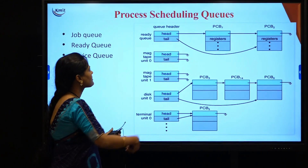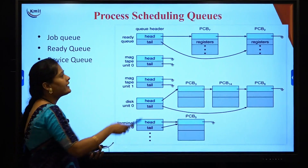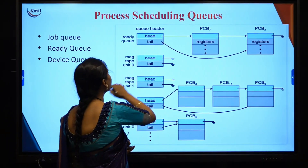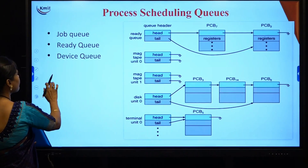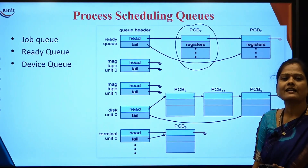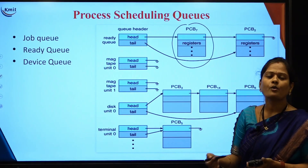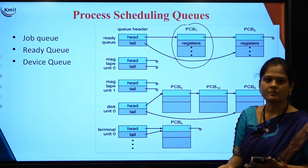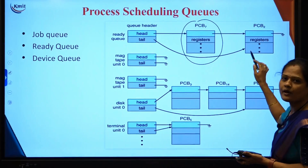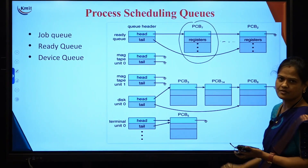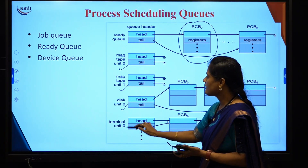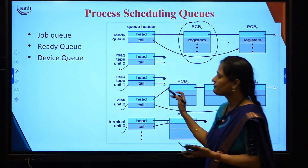Looking at the scheduling queue structure, the ready queue maintains the list of all processes present. It stores the PCB — process control block — information for each process. A PCB contains information related to the process state, how many registers it is using, what scheduling algorithm is being used, and so on. This queue has a pointer pointing to the first process and a pointer pointing to the last process. For each device, there is a different device queue.